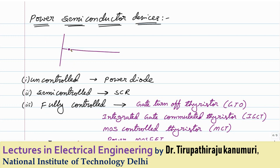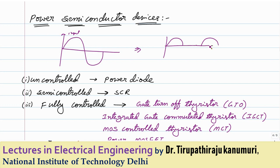Let us take a sine wave as input. In uncontrolled devices, we cannot control at what instant the device should be switched on. For example, a diode will automatically do the rectification — it switches on during the positive half cycle and switches off during the negative half cycle automatically. We cannot control the instant of switch-on or switch-off; it allows all positive half cycles and blocks the complete negative half cycle.